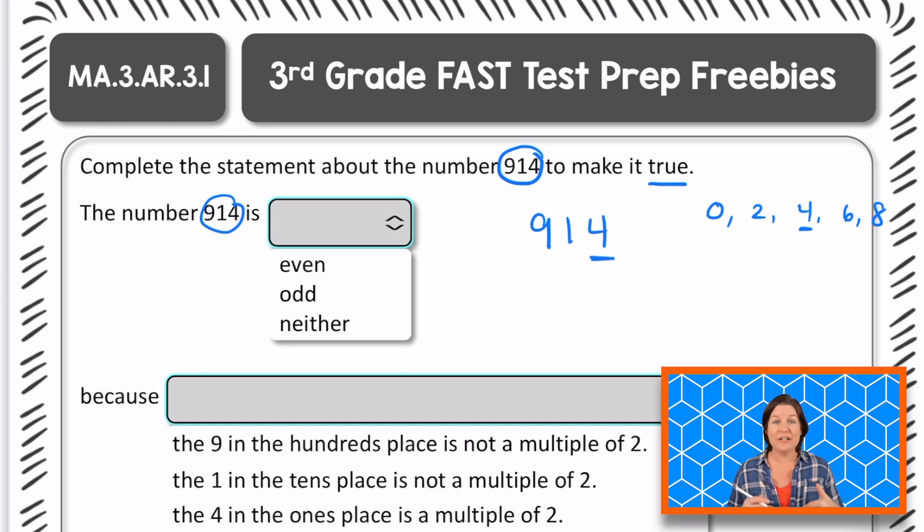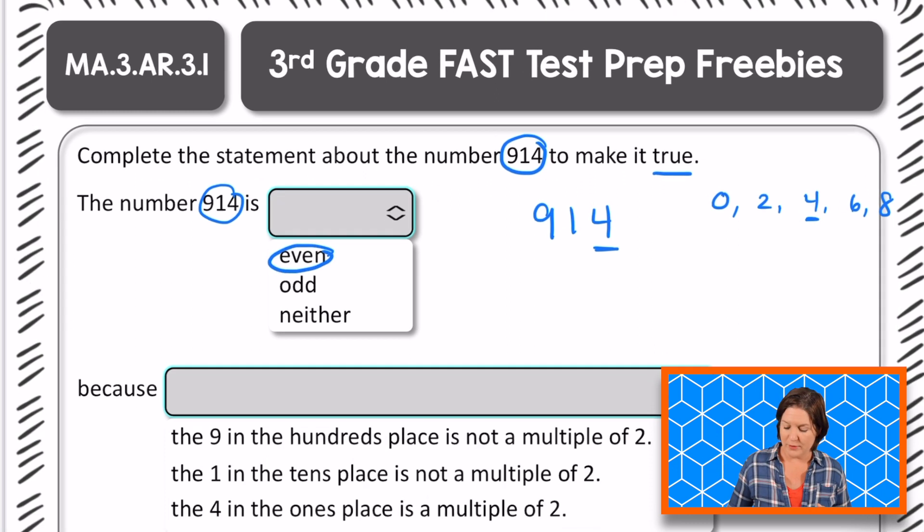So that means that 914, because of that four in the ones place, this number is what? Even, that's right. So we would go ahead and select this one and we would click on even. And when we do that, it would populate in this box right up here, even.